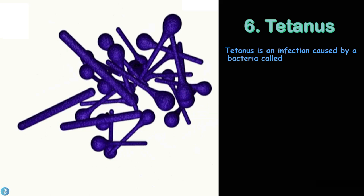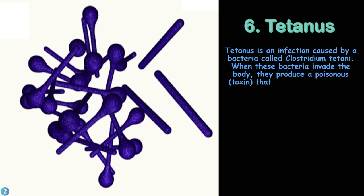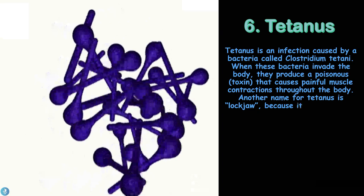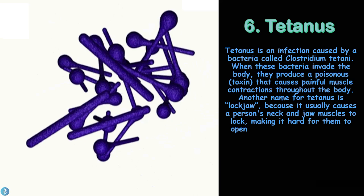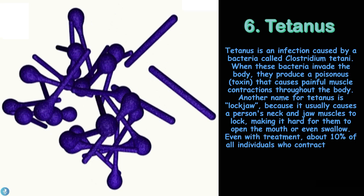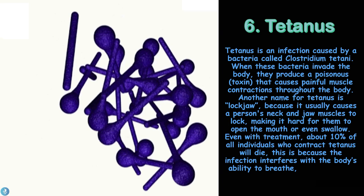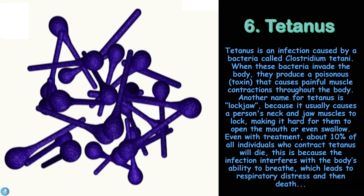Number six is tetanus, an infection caused by the bacteria Clostridium tetani. When these bacteria invade the body, they produce a poisonous toxin that causes painful muscle contractions throughout the body. Another name for tetanus is lockjaw, because it usually causes a person's neck and jaw muscles to lock, making it harder to open their mouth or swallow. Even with treatment, about 10 percent of individuals who contract tetanus will die, as the infection interferes with the body's ability to breathe, leading to respiratory distress and death.